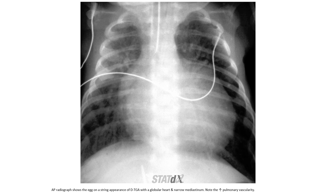AP radiographs of D-transposition of the great arteries demonstrate a globular heart and narrow mediastinum. Note the increased pulmonary vascularity, which is a key finding of D-TGA.